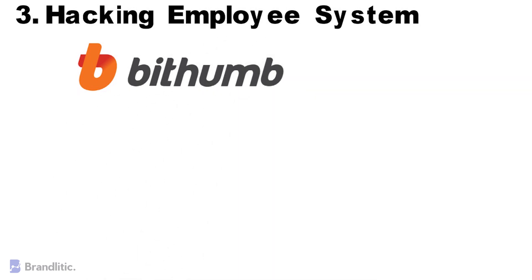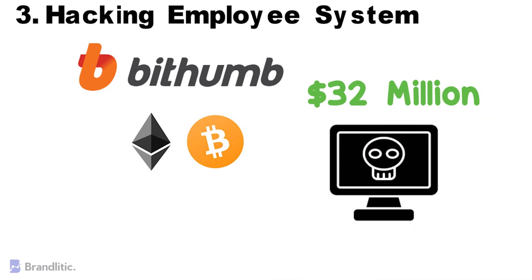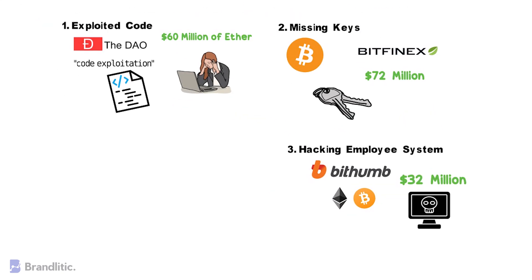Number three: hacking employee systems. Another example is Bithumb, one of the biggest cryptocurrency exchanges for Bitcoin and Ethereum, based in South Korea. Hackers were able to access data of around 30,000 users and steal Bitcoin worth 32 million dollars. Interestingly, the core servers were intact — a compromised employee computer was the primary culprit. This shows that if an attacker gains access to a network node and internal security measures are not in place, it can prove costly for a business.